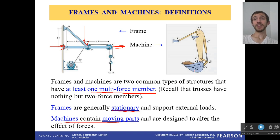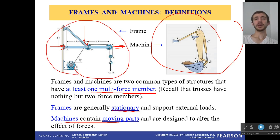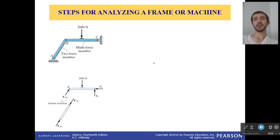Machines contain moving parts and they're designed to alter the effective forces. So with those pliers, my grip strength is not strong enough to crush something, but I alter my grip strength by enhancing it using those pliers. So this is a machine because it moves, it does work, it enhances things. This is a frame because it just supports loads. And both of them have a multi-force member. Lots of forces on that one.